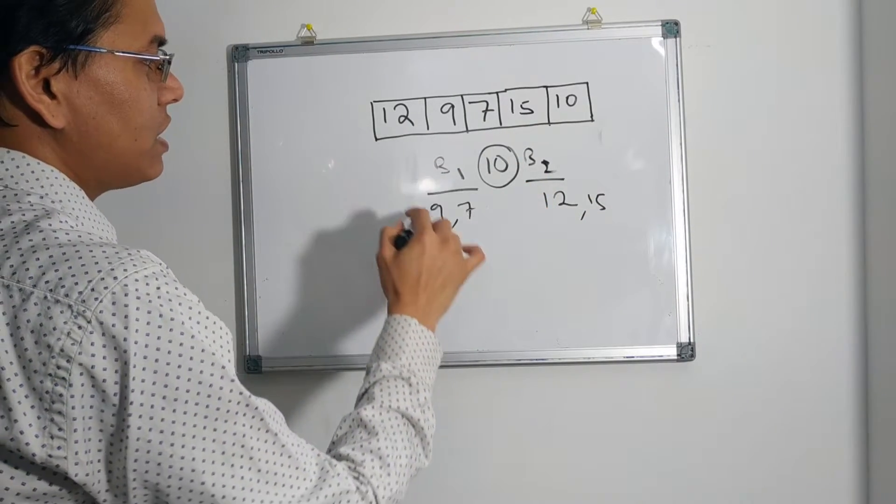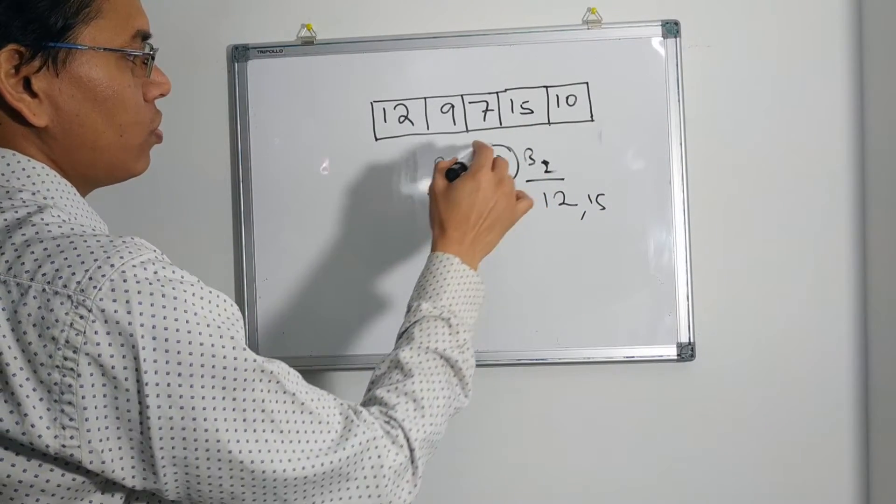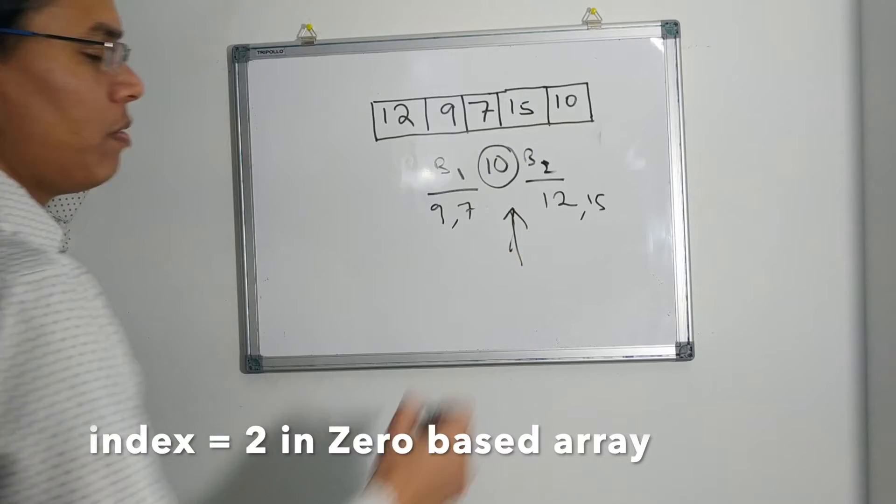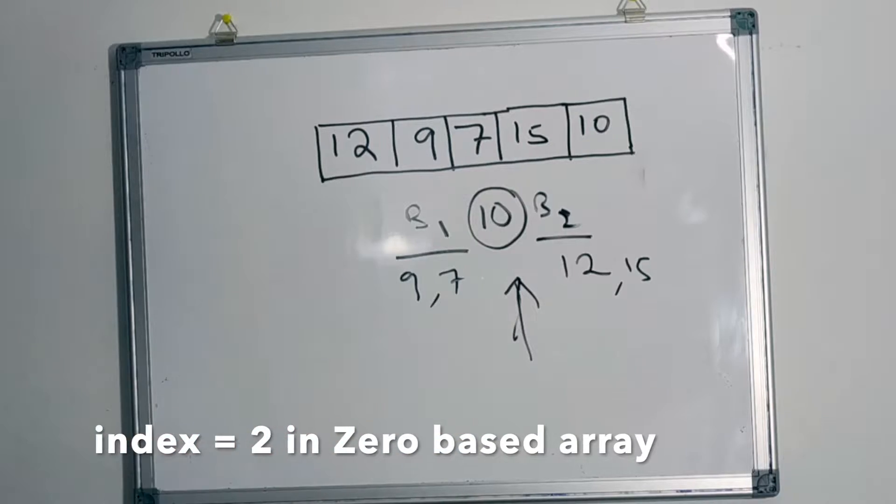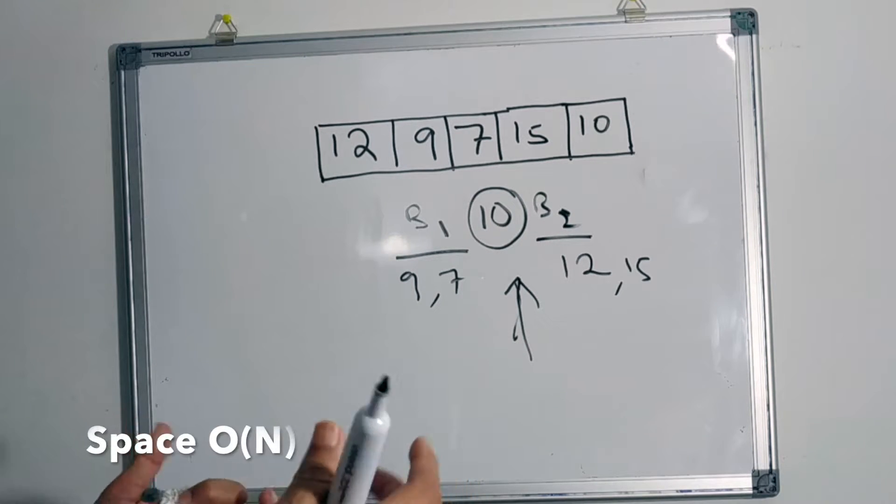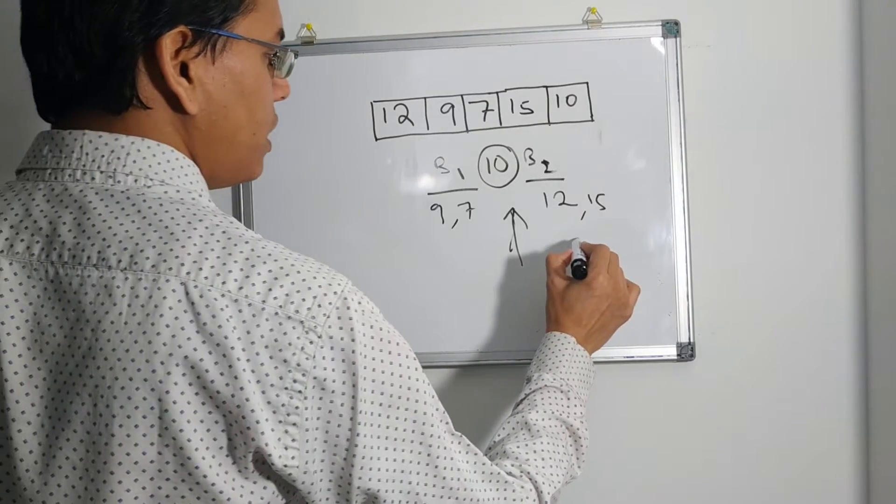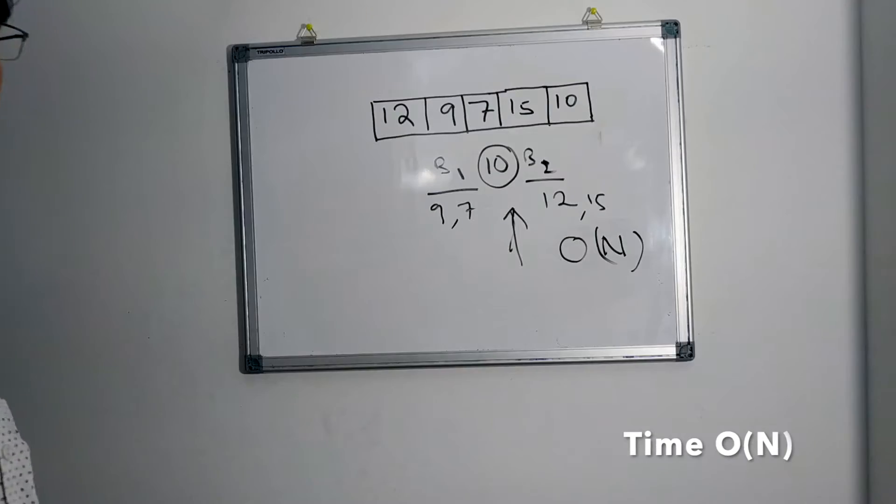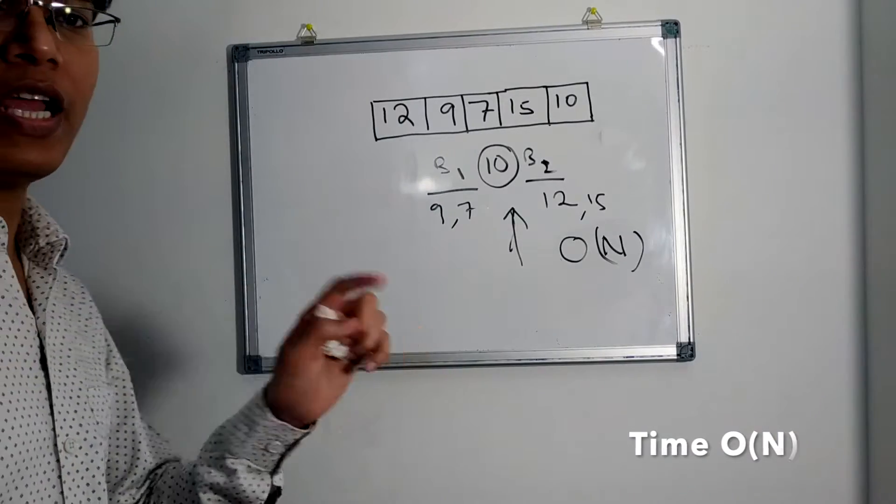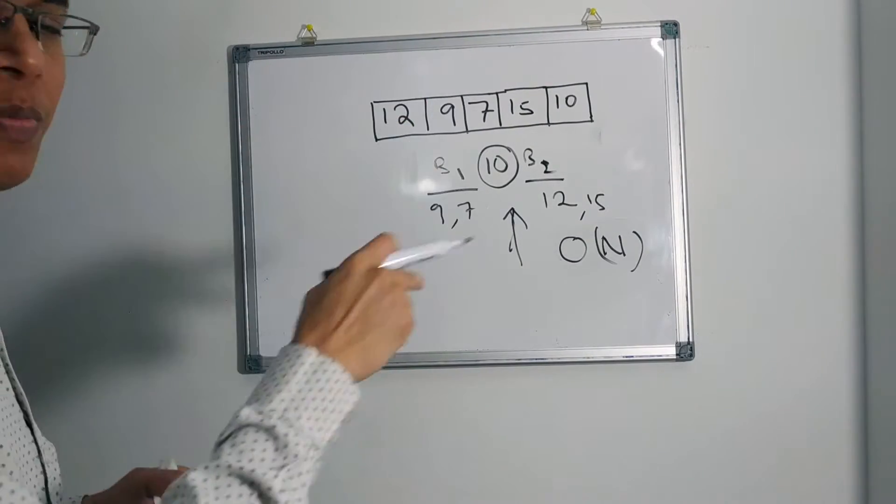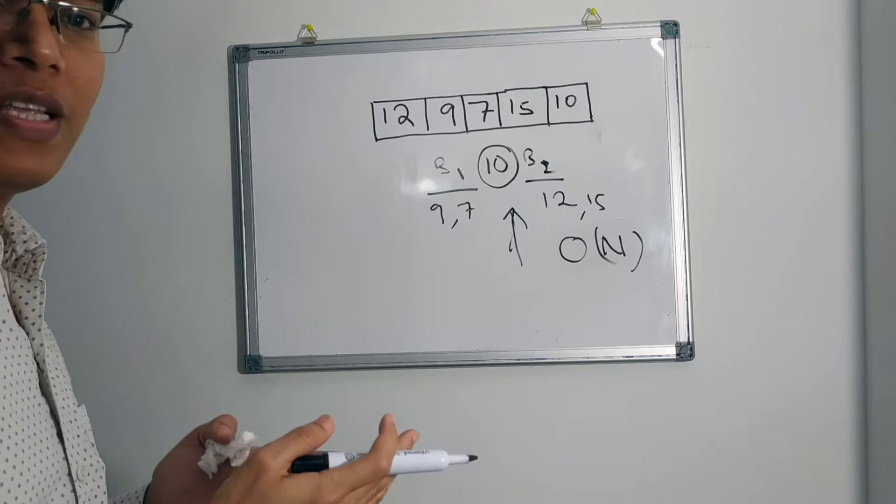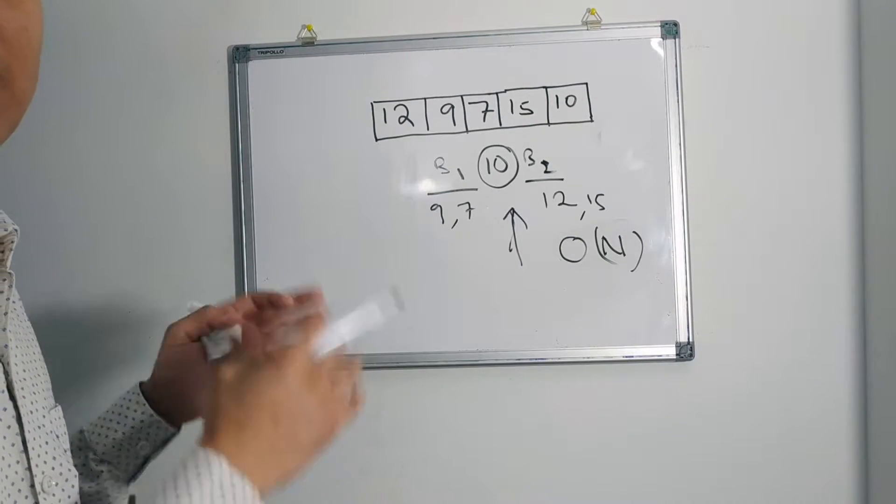We can clearly see that B1 bucket has two elements, so 10 is having the third position. This is one way where we had to use two extra buckets of total size O(N) again. But the time complexity is O(N) because we just scanned through the array once. In this problem we have used extra space. Let's try to do this in place.